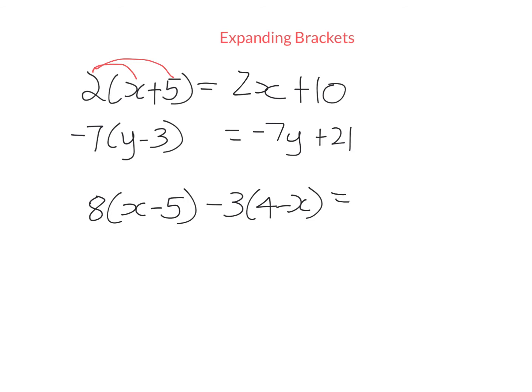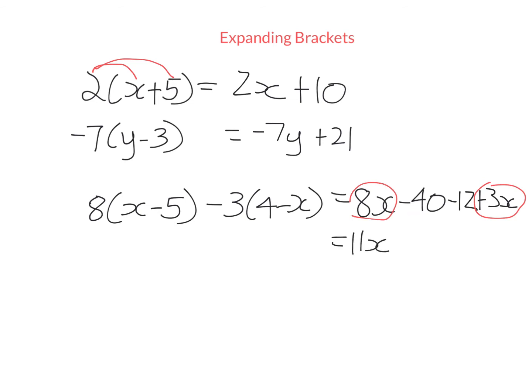Sometimes you'll get something where you have to expand and simplify. Expanding the first bracket: 8 times x, 8 times negative 5. Now expanding the second set of brackets: negative 3 times 4 — negative times positive is a negative — and negative 3 times negative x — negative times negative gives me a positive x. Now I can simplify because there are like terms. 8x and 3x are like terms — 8 plus 3 is 11. And negative 40 and negative 12 — I can subtract those numbers and get minus 52. And then I'm done.